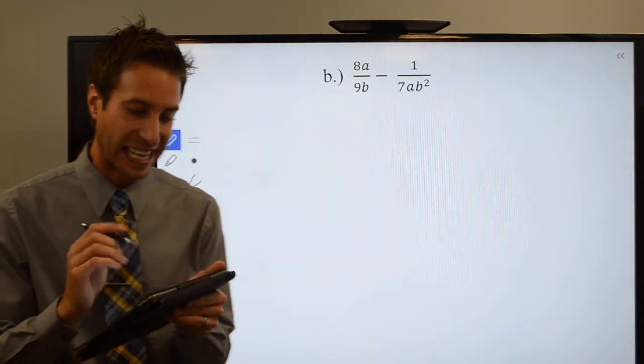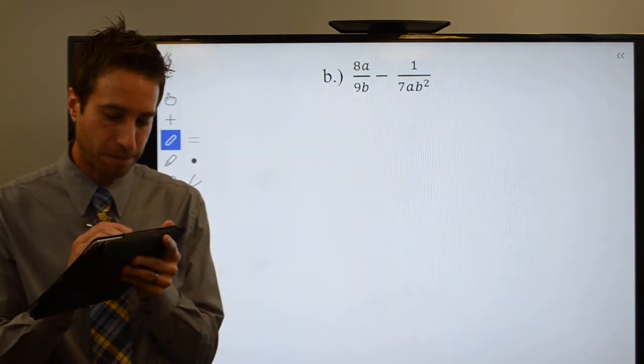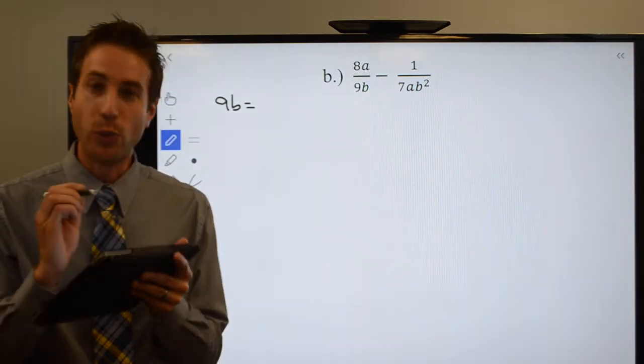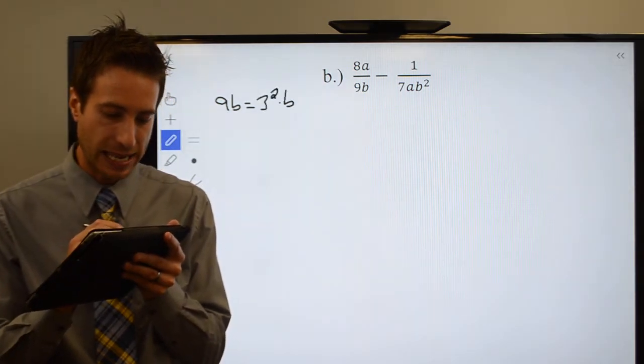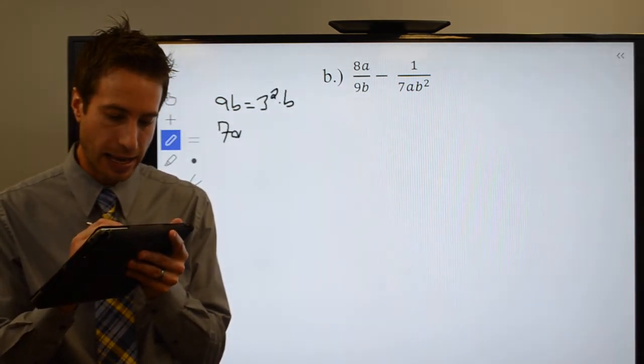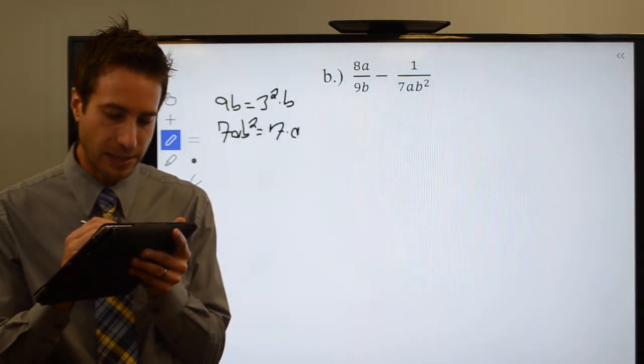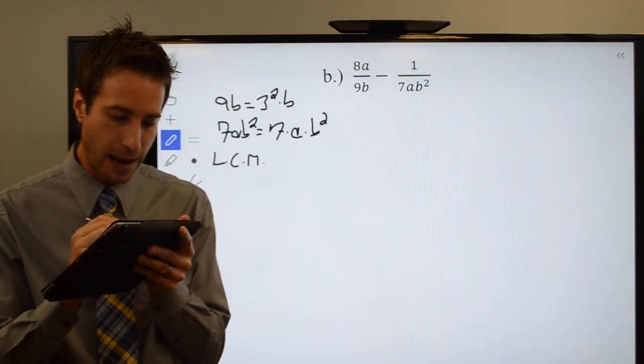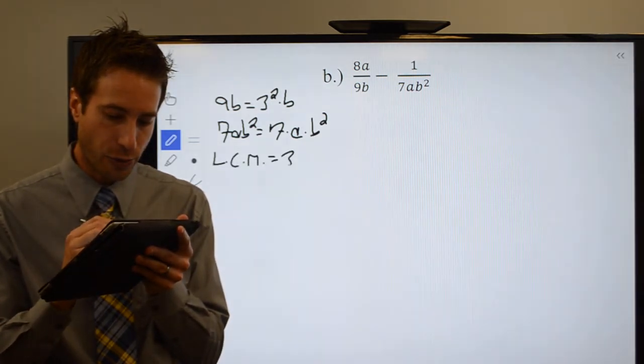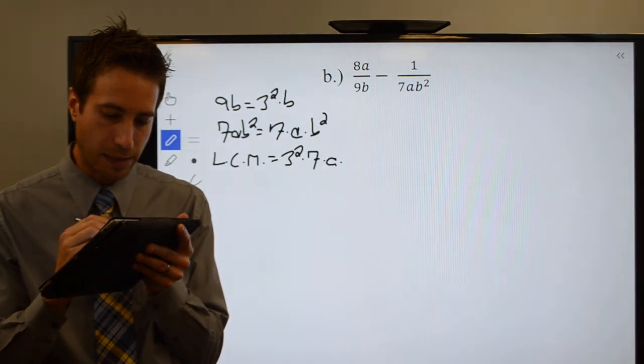So here we go, let's just jump right into this again. 9B—well if we factor that, we know that 9 is 3 squared, so I'll have 3 squared times B. 7AB squared, well 7 is prime, so it'll just be 7 times A times B squared, which means that my LCM, easy to do, 3 squared times 7 times A times B squared.